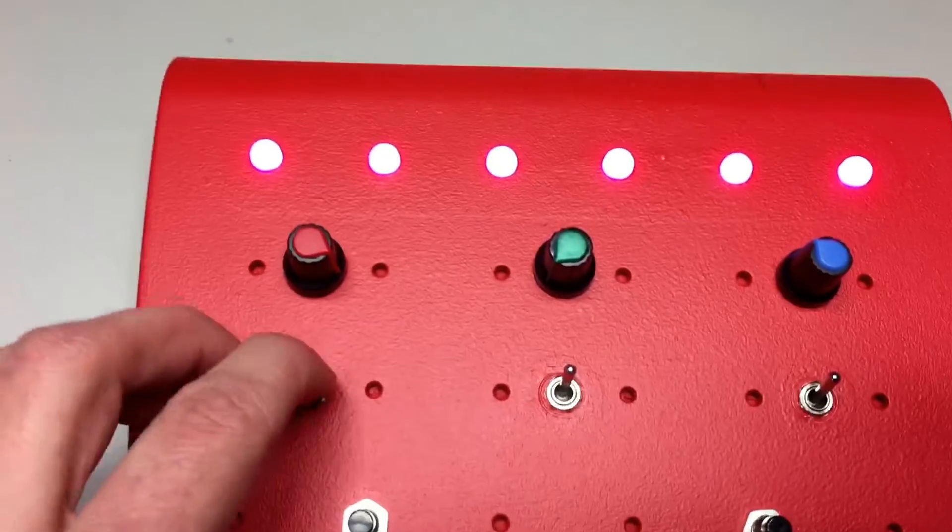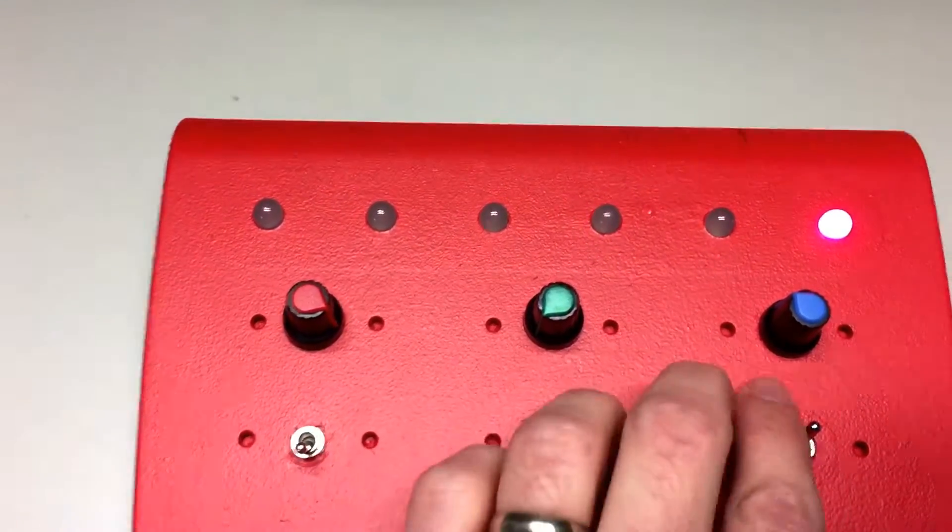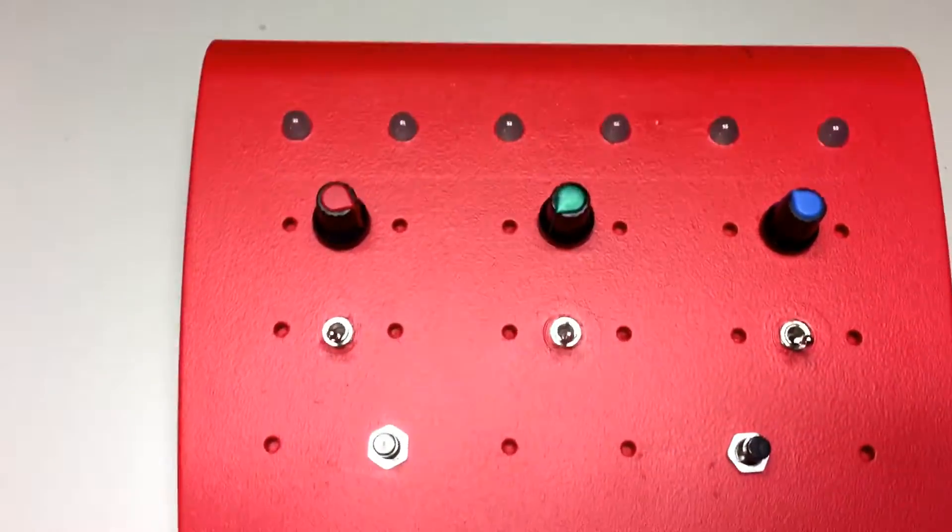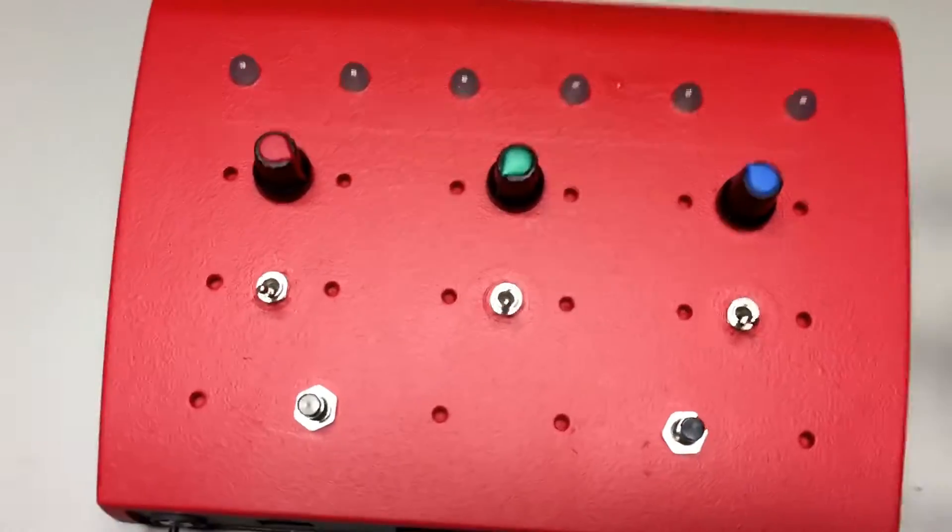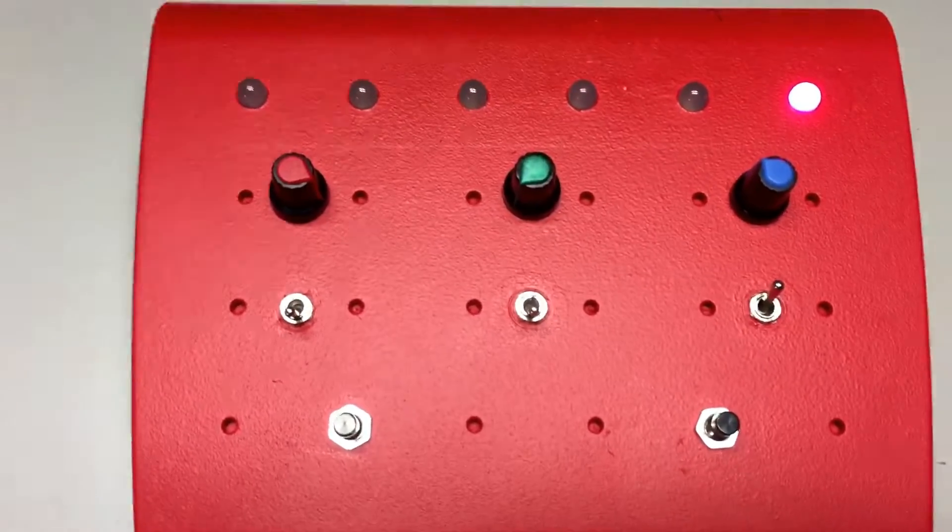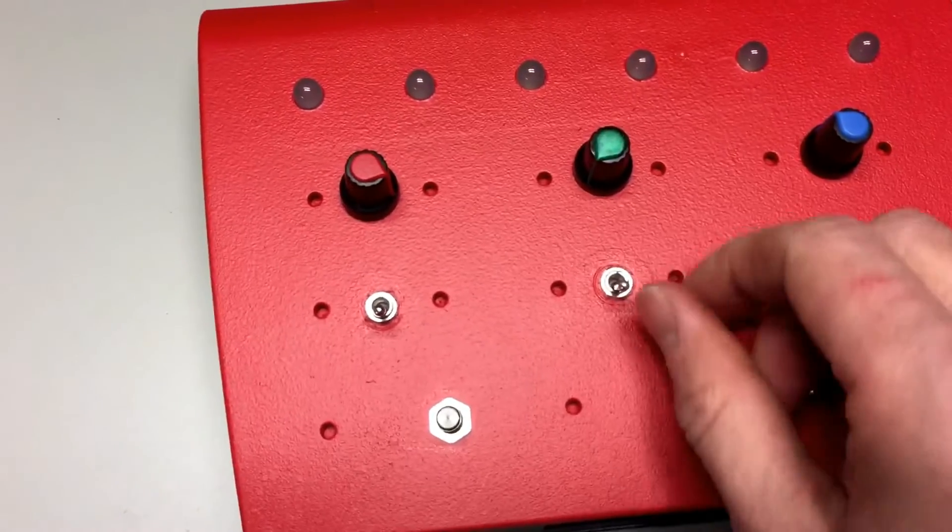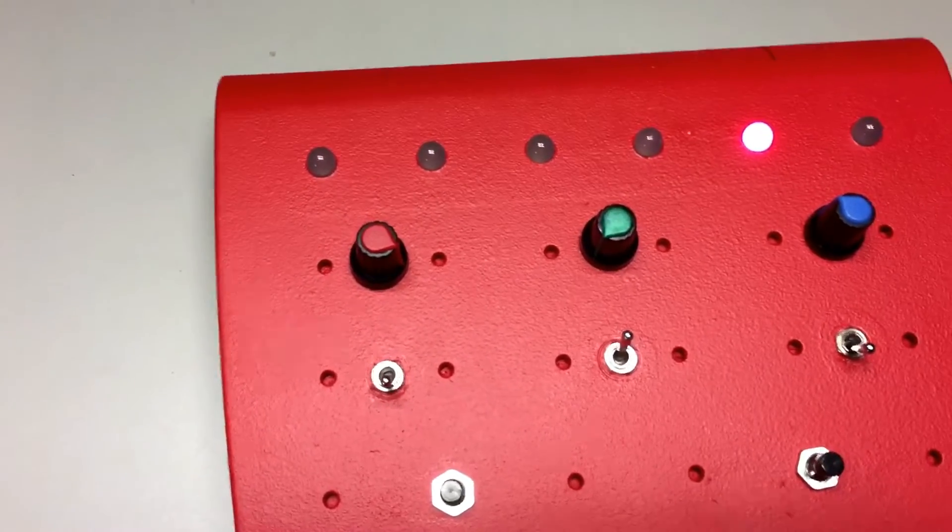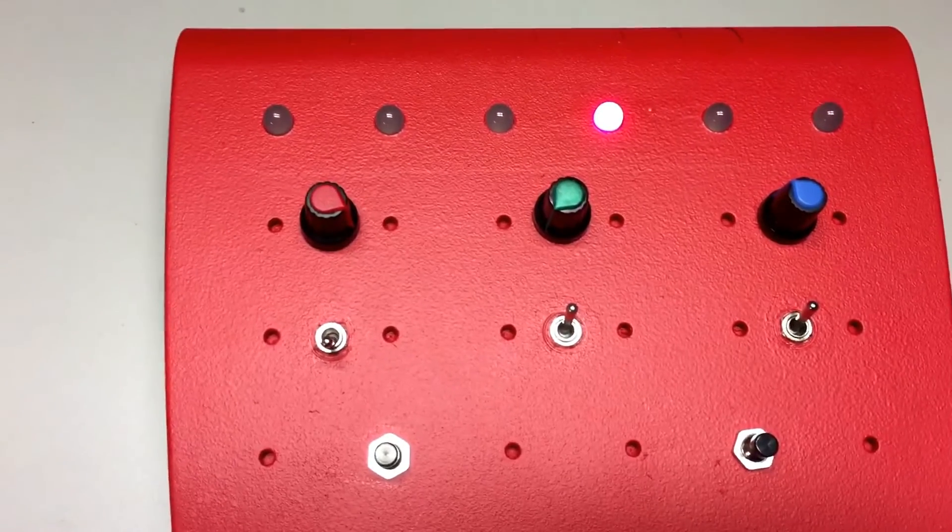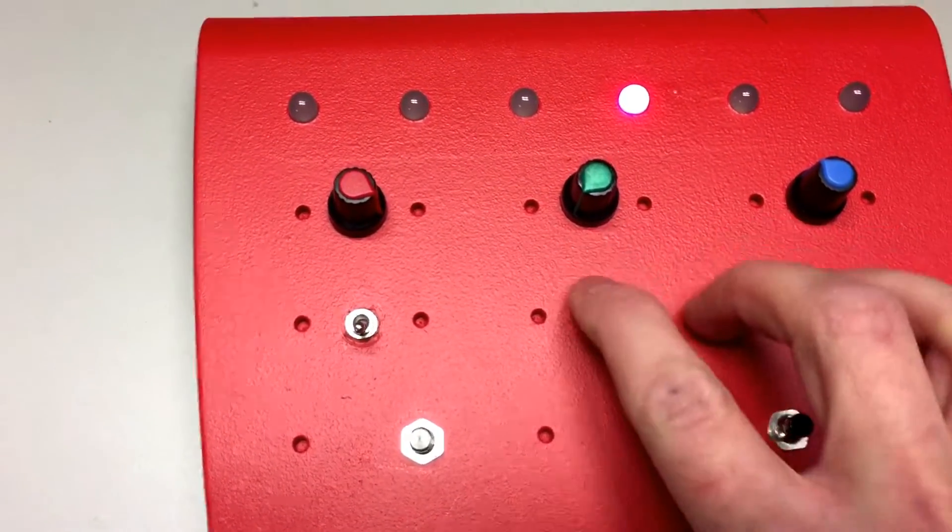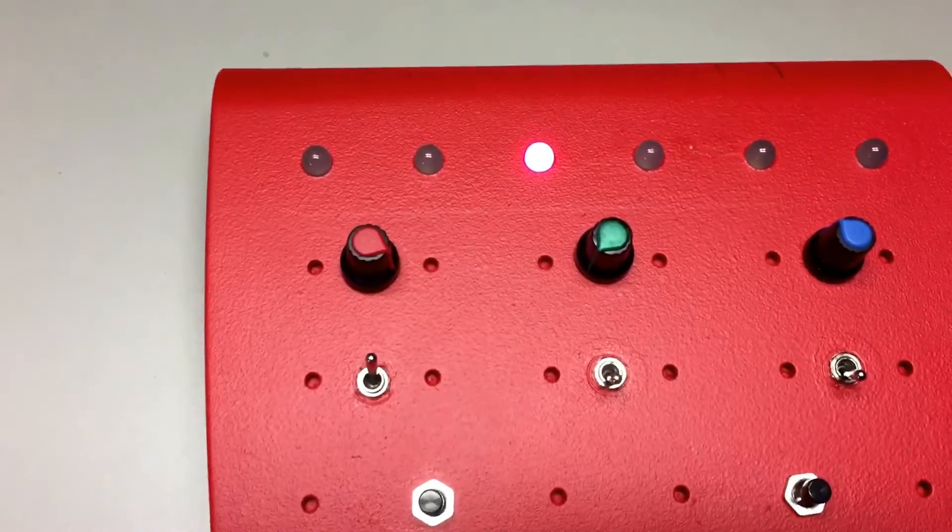Secondly we have these switches, and the first mode teaches you how to count in binary. You turn the first switch on and that's a one, and the first LED comes on. If you turn on the second one, that's a two. Turn on both and we have three. Fourth switch gives us four, and so on.